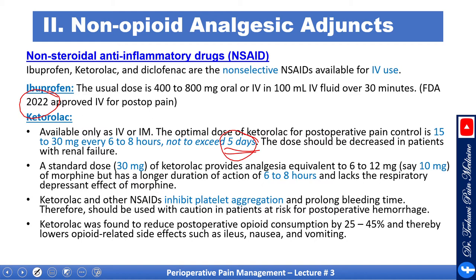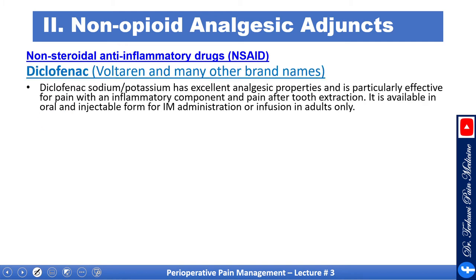A standard dose of 30 mg of ketorolac provides analgesia equivalent to approximately 10 mg of morphine, but has a longer duration and lacks the respiratory depressant effect of morphine — a very potent medication. Ketorolac and other NSAIDs inhibit platelet aggregation and prolong bleeding time, so use with caution in patients at risk of postoperative hemorrhage. Ketorolac was found to reduce postoperative opioid consumption by 25 to 45 percent, thereby lowering opioid-related side effects such as ileus, nausea, and vomiting.